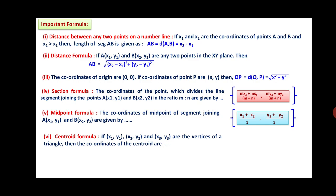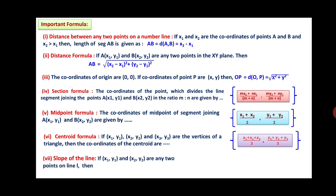Centroid Formula: if (x1, y1), (x2, y2), and (x3, y3) are the vertices of a triangle, then the coordinates of the centroid are x-coordinate equals (x1 + x2 + x3) divided by 3 and y-coordinate equals (y1 + y2 + y3) divided by 3. Slope of the Line: if (x1, y1) and (x2, y2) are any two points on line L, then the slope of line L equals (y2 minus y1) divided by (x2 minus x1).